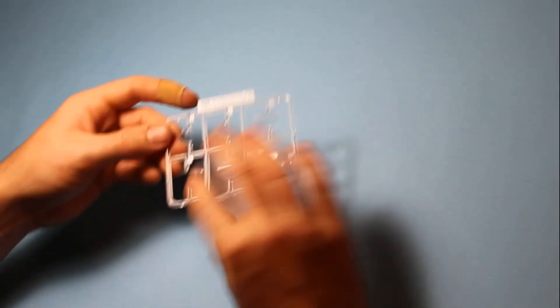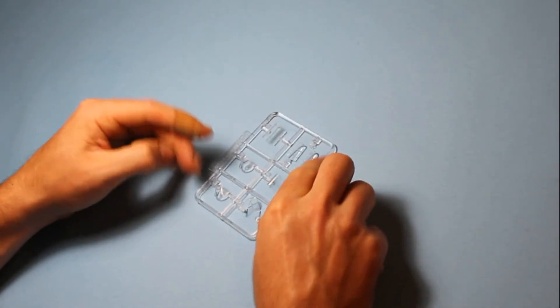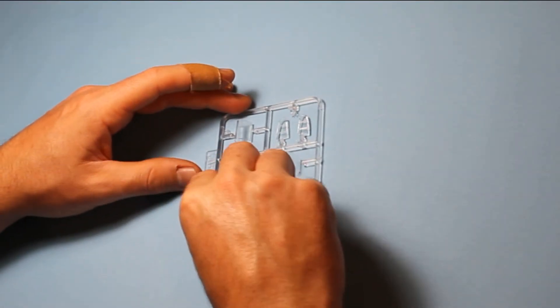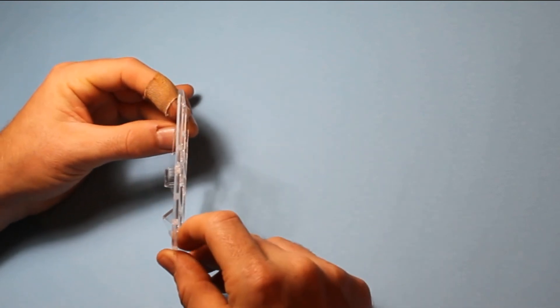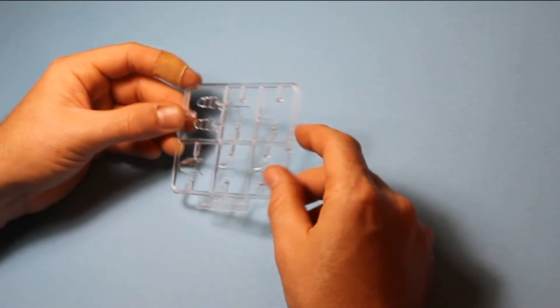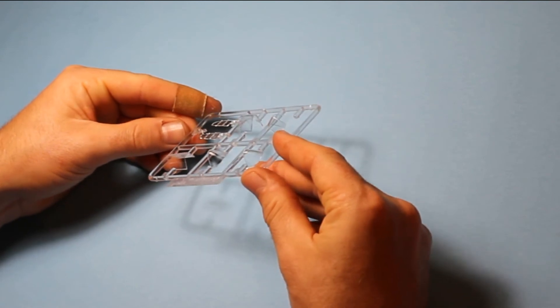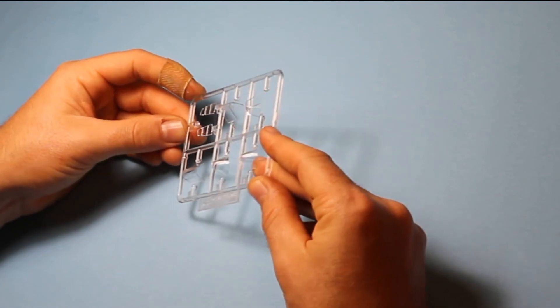Then we've got the clear parts, which are very clear, especially for a 1/72nd scale kit. They're crystal clear. They're on par with Eduard clear parts. So that's very nice to see.